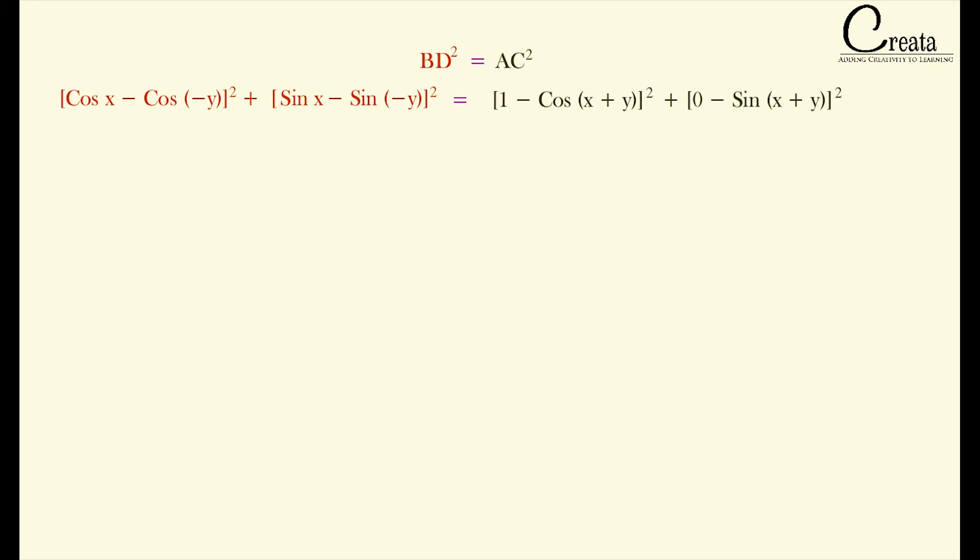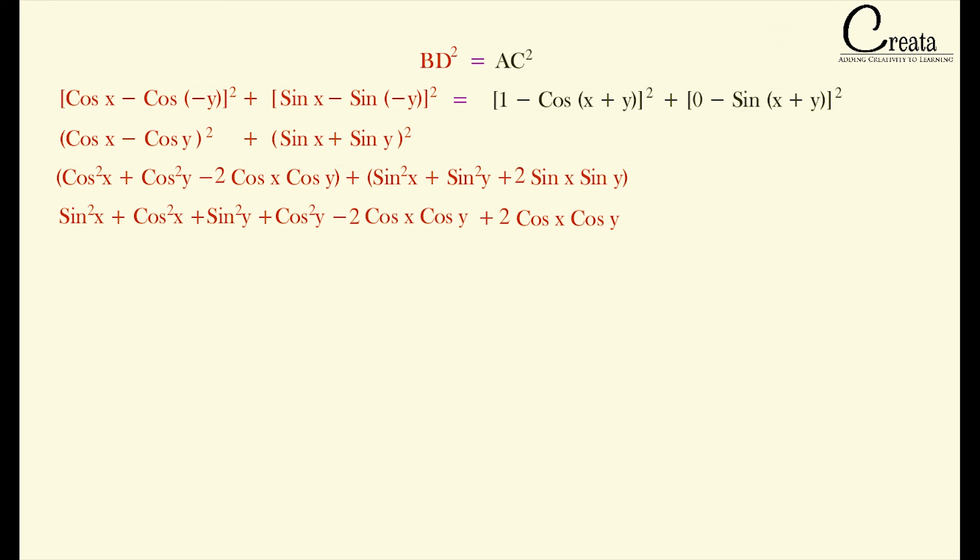Let's solve left hand side first. Just apply some basic trigonometric formulas. That is cos minus y equal to cos y. Sin minus y equal to minus sin y. Now open the square with formula A plus B whole square which is equal to A square plus B square plus 2AB. Now applying the trigonometric identity formula sin square theta plus cos square theta is equal to 1. By applying simple algebra and some basic trigonometric formulas we got our output.